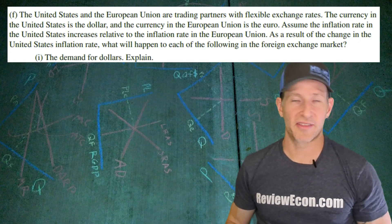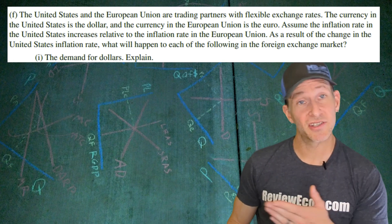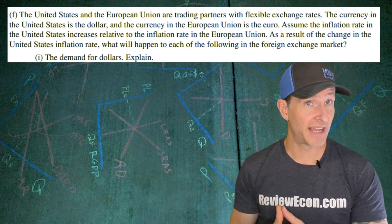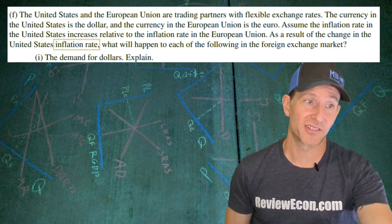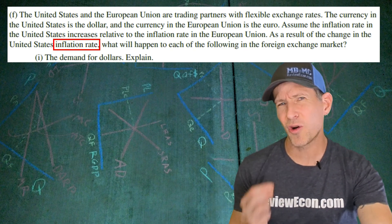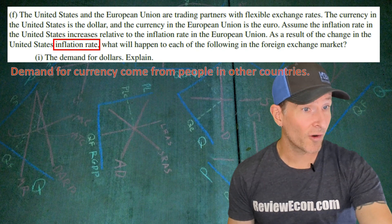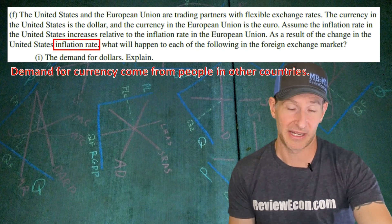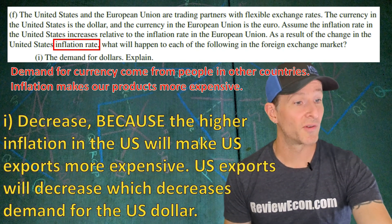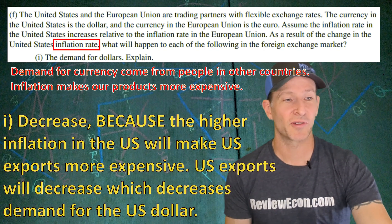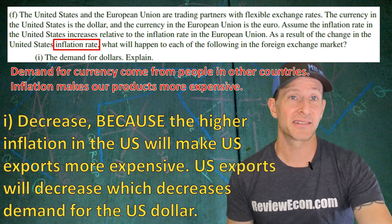For part F we're going to assume that the United States and the European Union are trading partners with flexible exchange rates. The inflation rate in the United States is going to increase relative to the inflation rate in the European Union and we have to explain the impact on the foreign exchange market. First we're looking at the demand for US dollars. When it comes to foreign exchange markets always look at what variable you're supposed to focus on. The demand for a currency comes from people wanting to buy things from this economy. Inflation makes products more expensive. So the demand for US dollars is going to decrease because the higher inflation rate in the United States will make US exports more expensive. US exports will then decrease which decreases the demand for the US dollar.